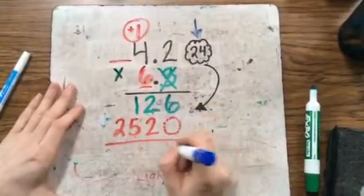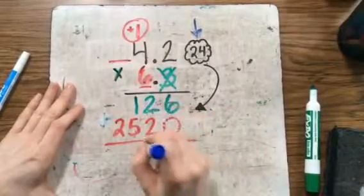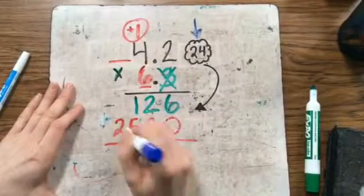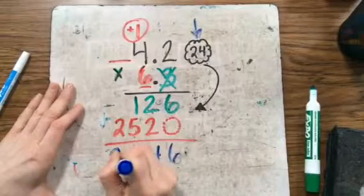So 6 plus 0 is 6, 2 plus 2 is 4, 5 plus 1 is 6, and 2 plus nothing is 2.